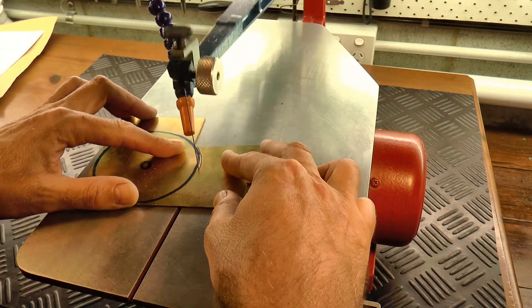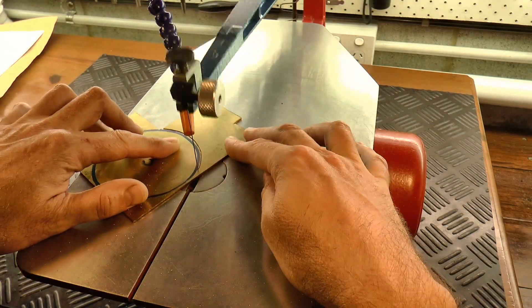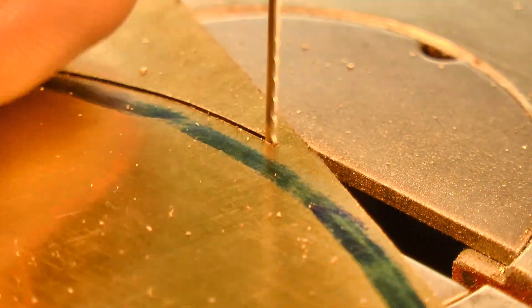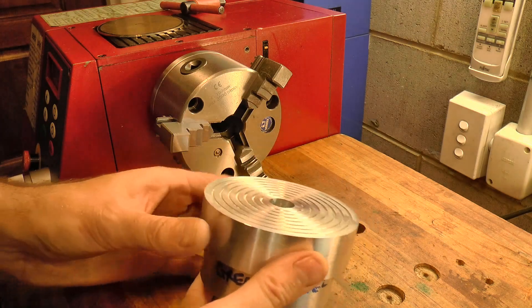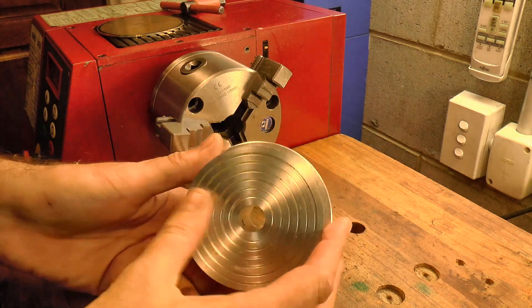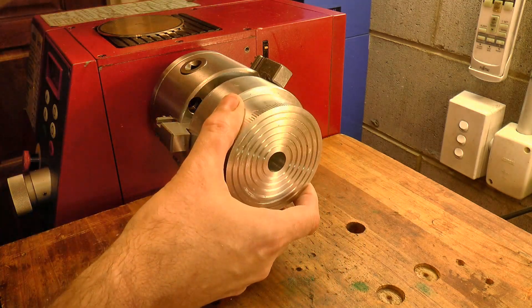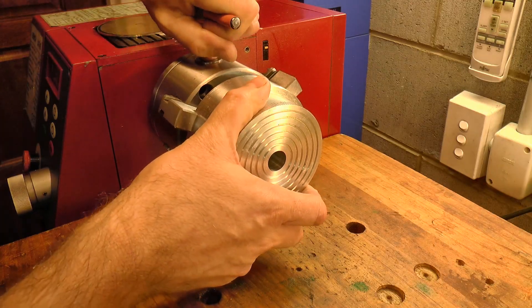Starting out with a sheet of 1/16th inch Engraver's Brass, I'd lightly mark the center, and then roughed out a blank. You're going to see me use these superglue arbors a lot as I make this clock. They're perfect for holding work pieces that need to be machined on the edges.